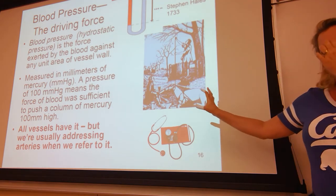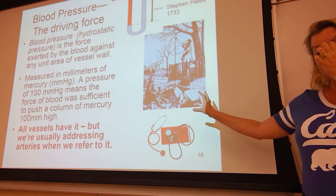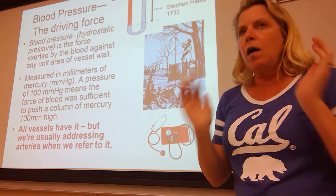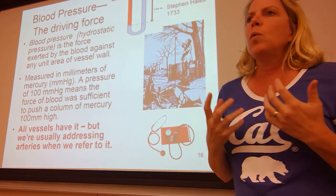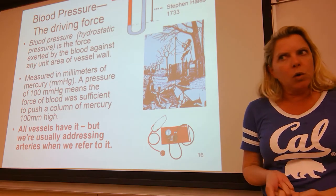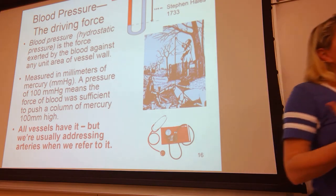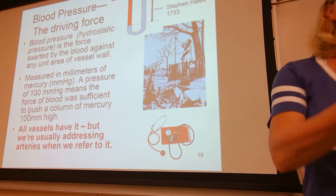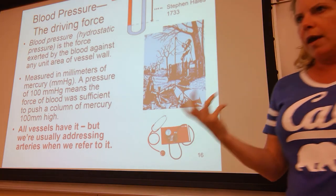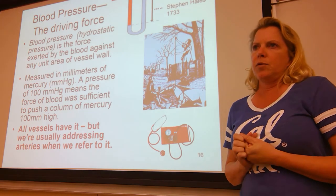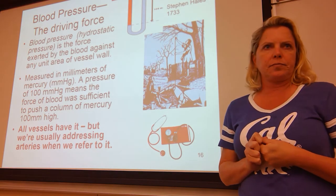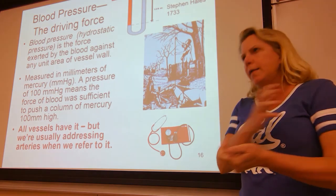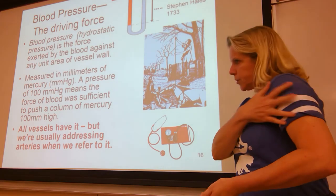All blood vessels have a blood pressure, but the ones we are most worried about are the arteries closest to the heart, because the heart is the pump that starts the pressure gradient. Where do we usually take blood pressure readings? Which arm? Why the left? Closest to the heart.